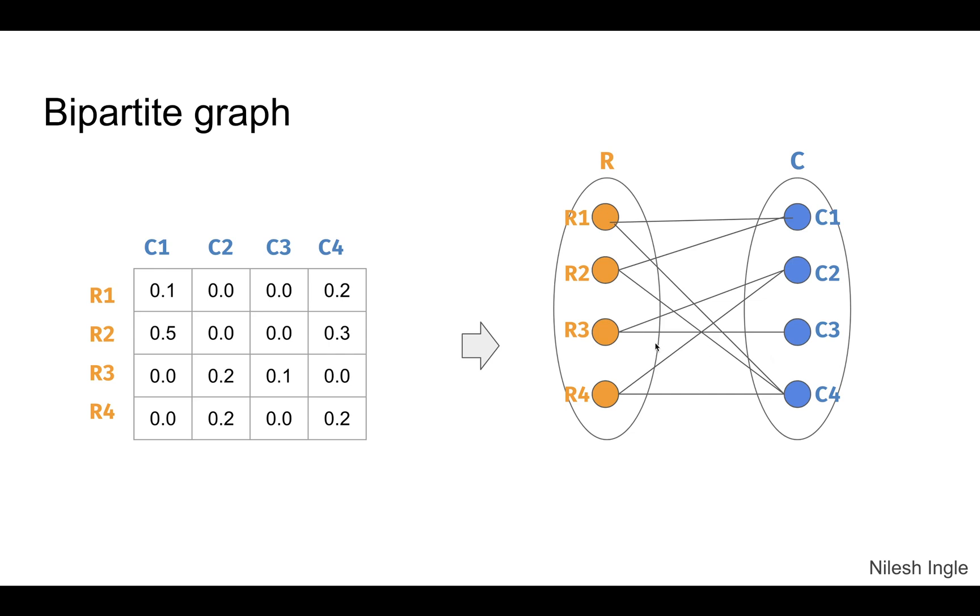Before we move on to the next topic, I want to mention what a bipartite graph is. Let's say we have this table on the left with columns C1 through C4 and four rows R1 through R4. Usually in previous videos, when we created a graph connecting nodes by lines, there were no two separate groups. But in this case, there are two separate groups: one group consists of columns C1 through C4, and one group contains rows R1 through R4. When we create a bipartite graph, it looks like this figure shown here—this is just for intuition purposes.